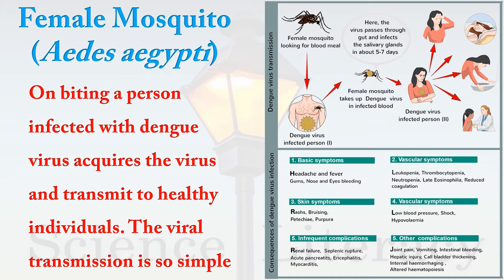It all starts with a female mosquito biting a person infected with the dengue virus. This virus multiplies inside the mosquito body, and this female mosquito can then transmit the viral infection to several other individuals.